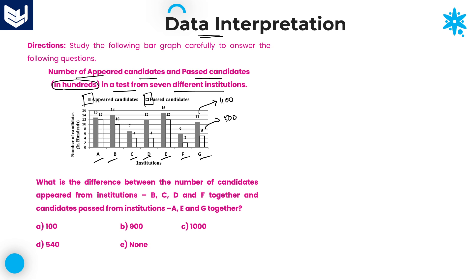Now we need to solve the questions according to the given information. The first question asks: what is the difference between the number of candidates appeared from institutions B, C, D, and F together, and the candidates passed from institutions A, E, and G together? Be very cautious about whether it is 'appeared' or 'passed'. First, take the values of appeared candidates from B, C, D, and F, then add all the values.